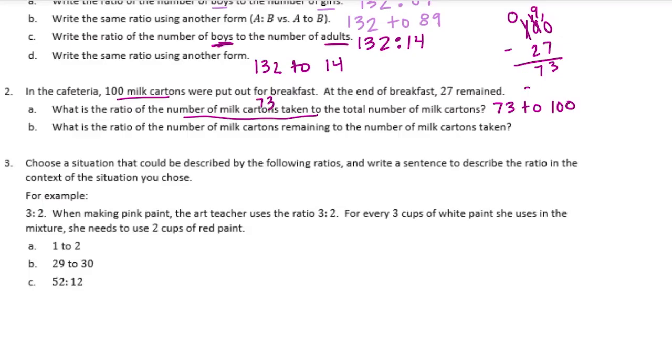What is the ratio of the number of milk cartons remaining to the number of milk cartons taken? So the number of milk cartons remaining was 27, that's going to be our first number. 27 to the number of milk cartons taken, that would be 73. So 27 to 73.